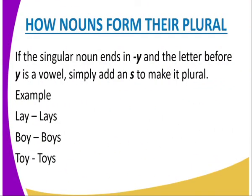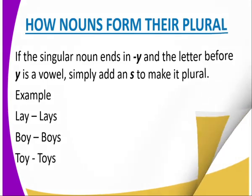To clarify: if the singular noun ends in Y and the letter before the Y is a vowel, we simply add S to make it plural. For instance, 'lay' — the Y is preceded by the vowel A — so it forms its plural by adding S: lays. Another example: boy to boys, toy to toys.